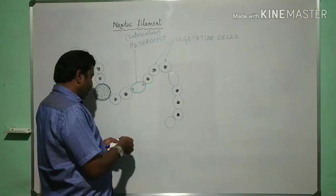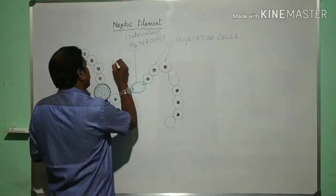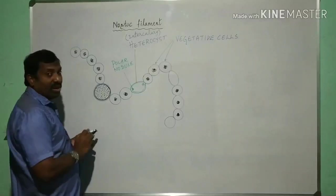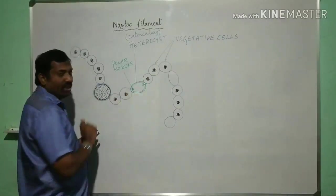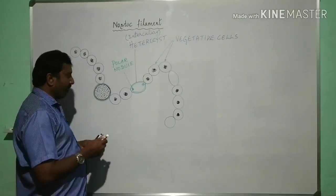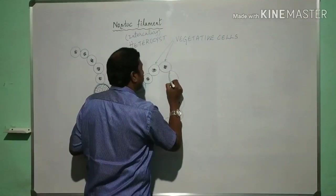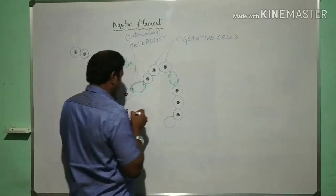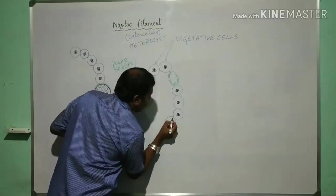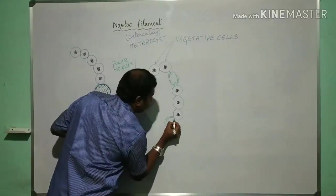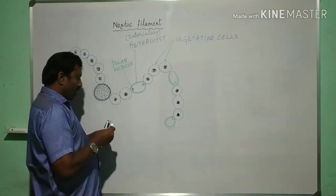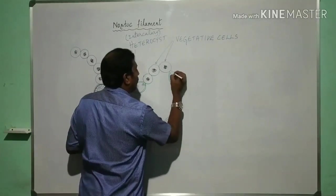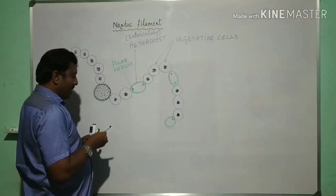Or polar nodules, that means this is polar nodule. A pair of polar nodules are present at both the ends where it is attached to the adjacent cells that is the vegetative cells. And here one more you can see, you can draw like this thick wall. The polar nodules terminal, also it may be present there only one polar nodule can be formed.